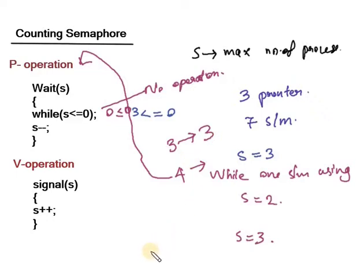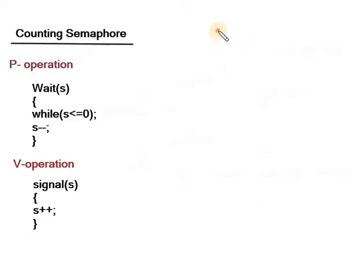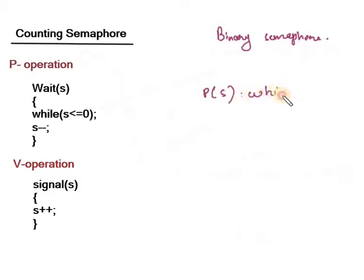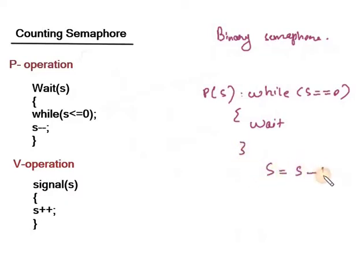There is a slight difference in binary semaphore because it uses only zeros and ones, as the name implies. In binary semaphore, the P operation is: while S equals 0, wait; then S equals S minus 1. The V operation is: S equals S plus 1.